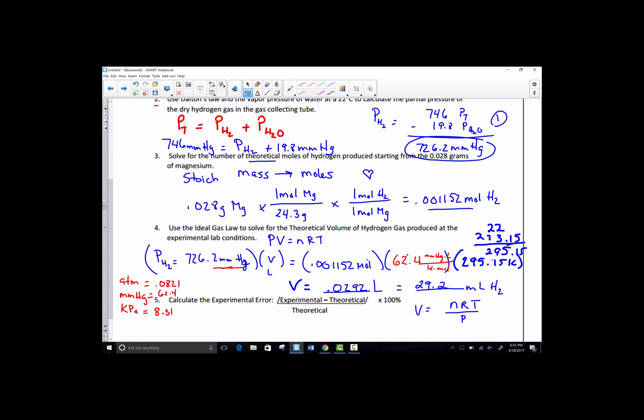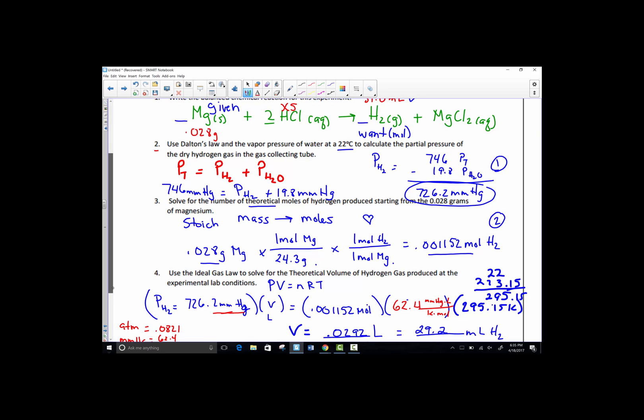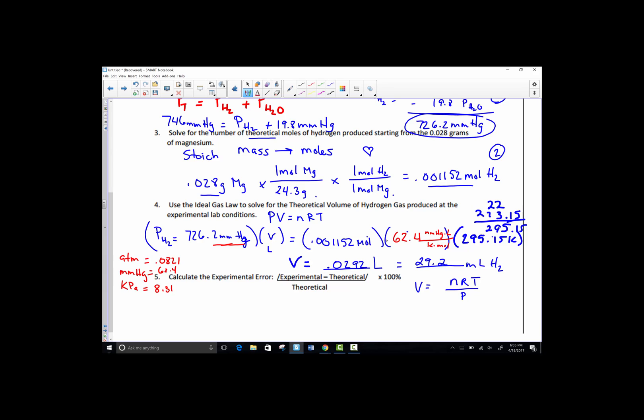So we corrected the pressure, step one, using the water vapor chart. Step two, we did stoichiometry to find the moles of hydrogen. Given the mass of magnesium, we found the moles of hydrogen. We did a step one, step two on our stoichiometry roadmap. The next thing we did was to put nRT solving for the theoretical volume. We used the corrected pressure. We subbed in the moles that we found in stoichiometry. We used the gas constant to match our pressure units. And we also used the Kelvin temperature of the water bath. Converted 22 to Kelvin.